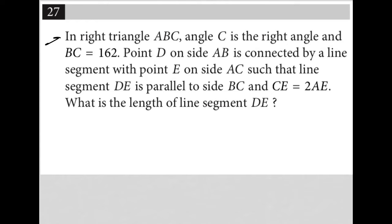So this question says, in right triangle ABC, angle C is the right angle and BC is 162. I'm going to draw that. Right triangle, right angle, that's C. So the other sides must be A and B. And then BC is 162.